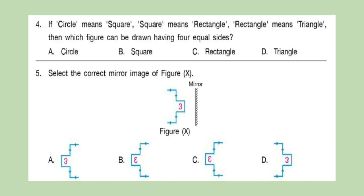Question 4: If circle means square, square means rectangle, rectangle means triangle, then which figure can be drawn having four equal sides? Question 5: Select the correct mirror image of figure X. Look at the figure X, options are shown here, choose your answer.